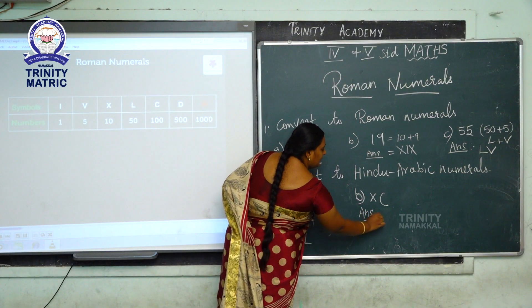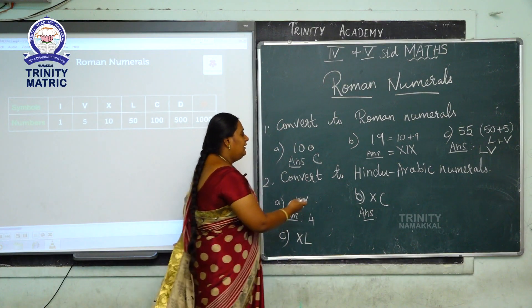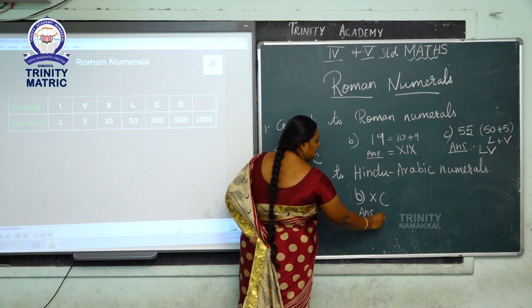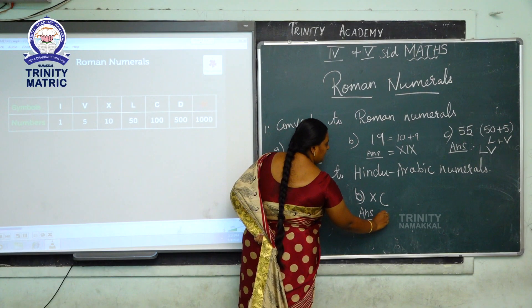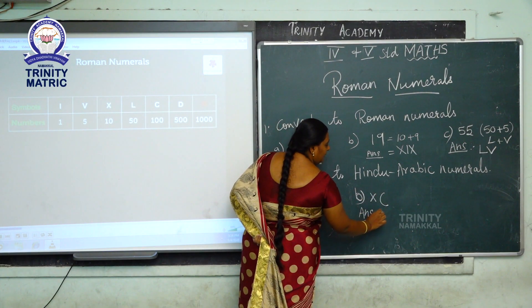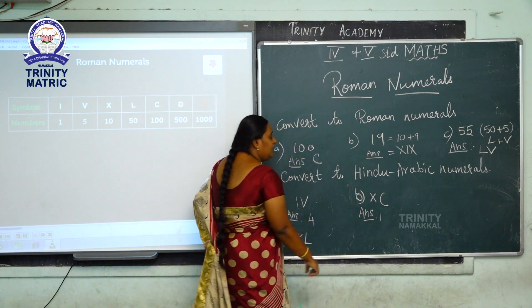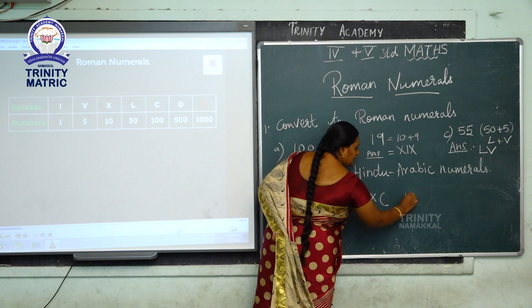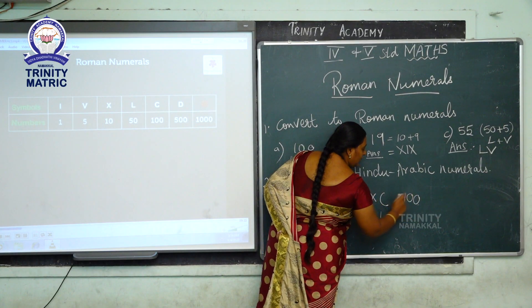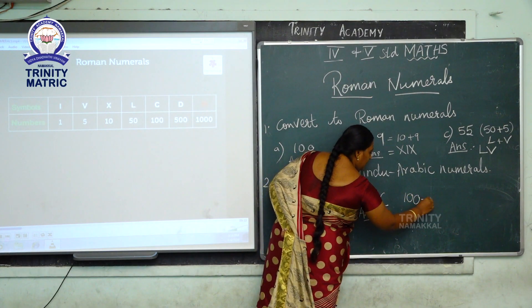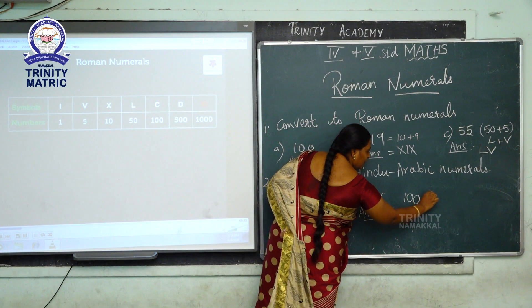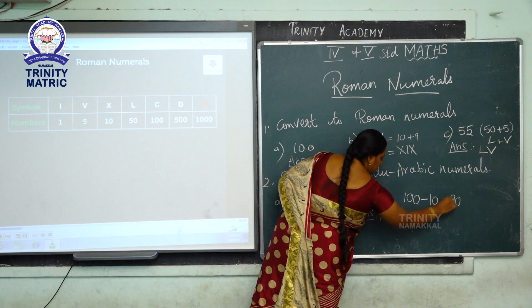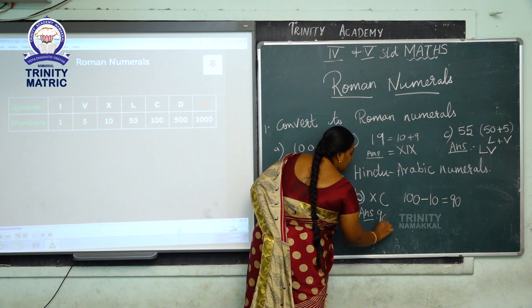Next, B sum: what is the Hindu-Arabic number for XC? X is 10, C is 100. Since X comes before C, you subtract: 100 minus 10 equals 90. So the answer is 90.